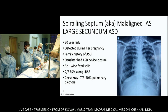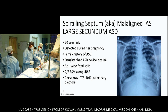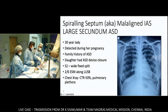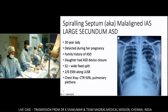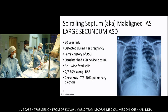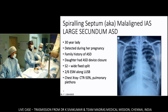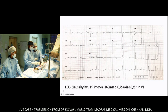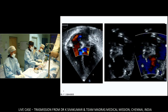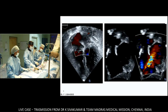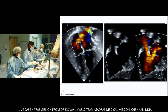Our case is a 30-year-old lady who had ASD detected during her pregnancy. Her daughter also has an ASD which was device-closed. Clinical examination: normal S1, wide split S2, and a 3/6 ejection systolic murmur. Chest X-ray shows a cardiothoracic ratio of 50% with pulmonary plethora. ECG shows sinus rhythm, normal PR interval, normal QRS axis, and an RSR pattern in V1.